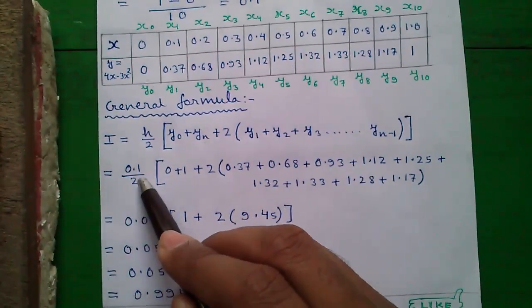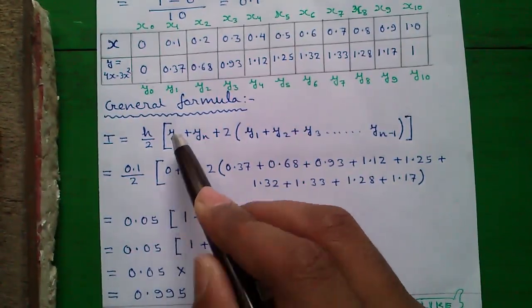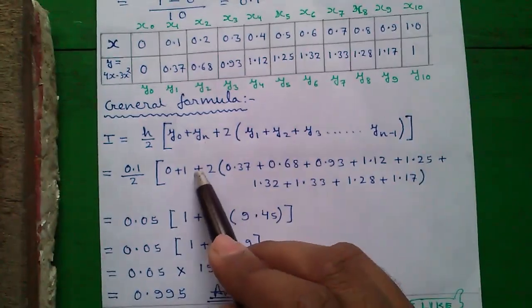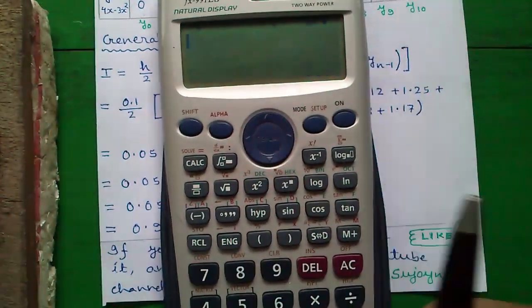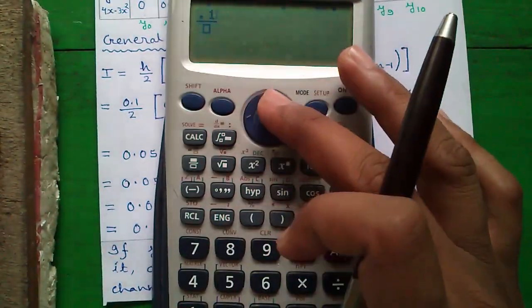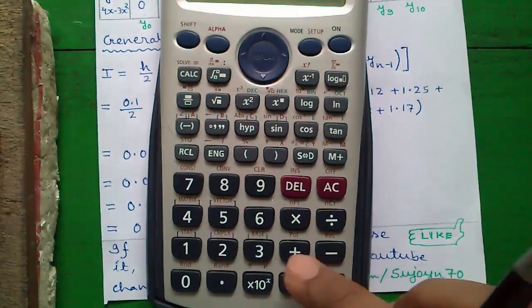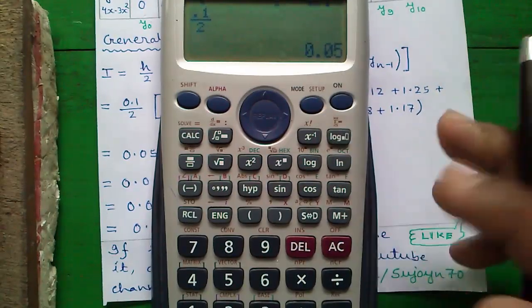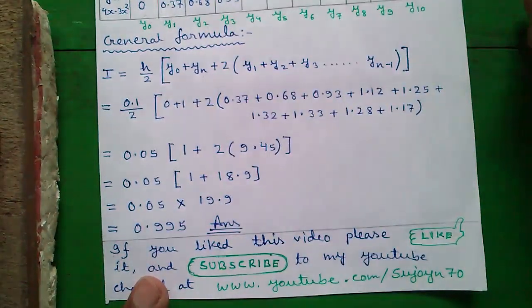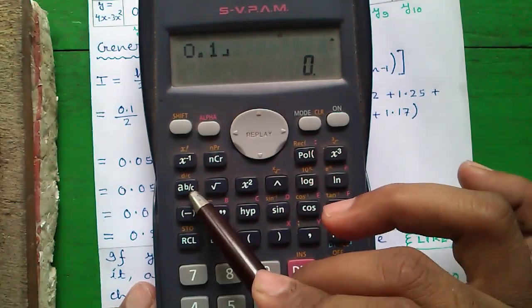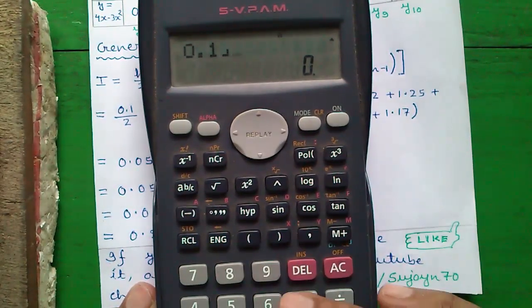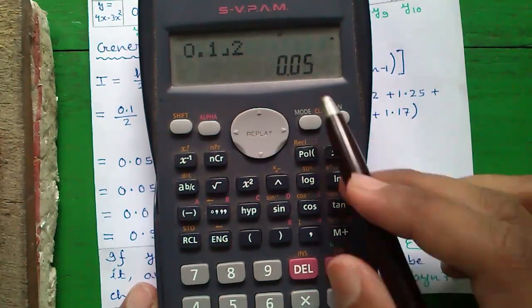So, that becomes 0.1 divided by 2 into 0 plus 1 plus 2 into rest of the values in between. That becomes 0.1 divided by 2, use the fraction button 0.1 divided by 2, press equals to that is 0.05. The fraction is also available on this calculator 0.1, use this button a into b by c that is 0.05.